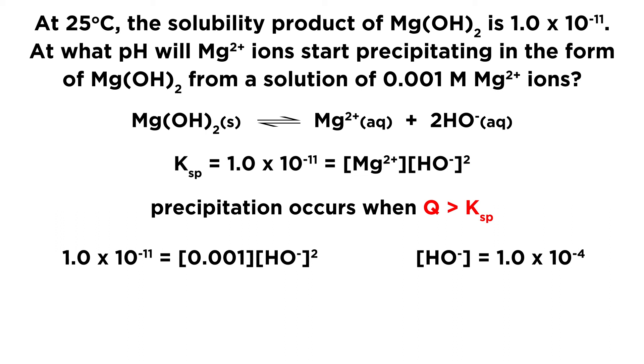But we don't want the hydroxide ion concentration. We need the pH. This is asking for a pH. So first, let's get the pOH. We know that that means the negative log of 10 to the negative 4, which will give us 4. We know that pH is going to be equal to 14 minus the pOH, and that is 14 minus 4, which equals 10. So we know that above a pH of 10, there will be sufficient hydroxide ions in solution so as to promote precipitation of magnesium hydroxide.